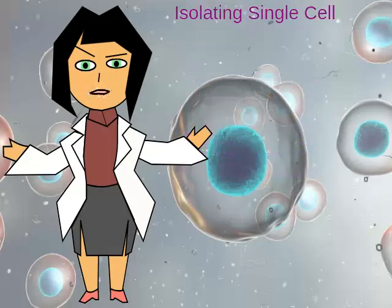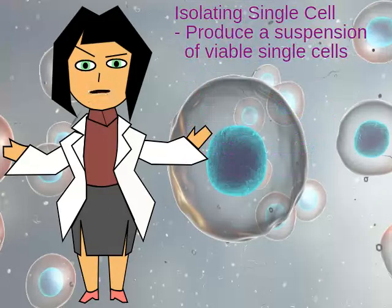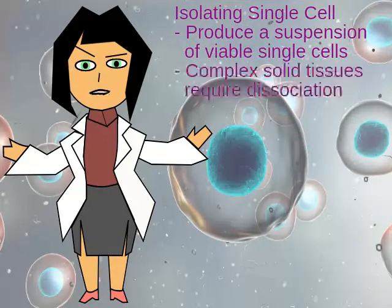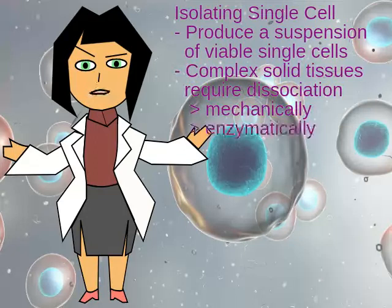Isolating Single-Cell. The first step is to produce a suspension of viable single cells. Complex solid tissues require mechanical or enzymatic dissociation.